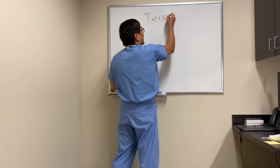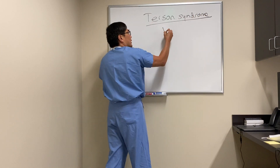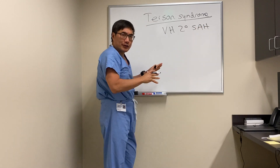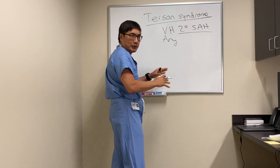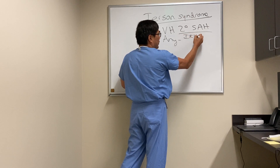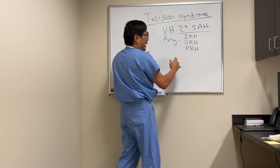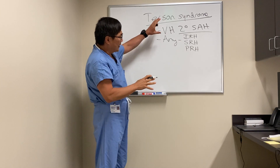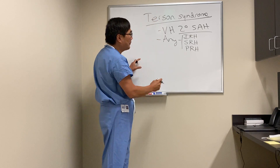Today we're going to be talking about Terson syndrome. Even though what Terson originally described was a vitreous hemorrhage secondary to a subarachnoid hemorrhage, most authors agree that it's any intraocular hemorrhage secondary to subarachnoid hemorrhage. That means it can be an intraretinal hemorrhage, a subretinal hemorrhage, or a preretinal hemorrhage, with or without papilledema. When we're looking in the eye of a patient who has a subarachnoid hemorrhage, we're looking for this intraocular hemorrhage to document Terson syndrome.